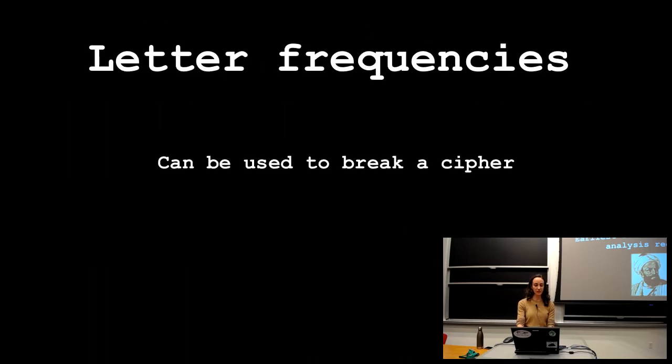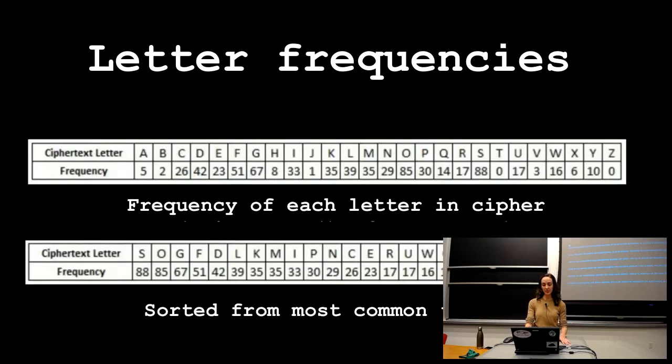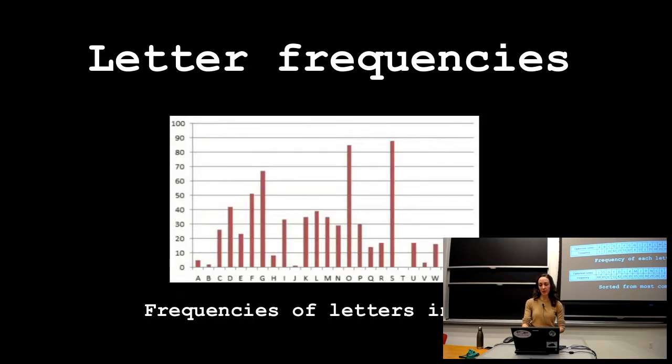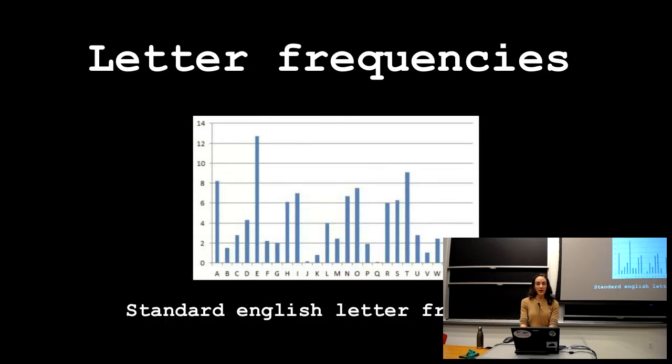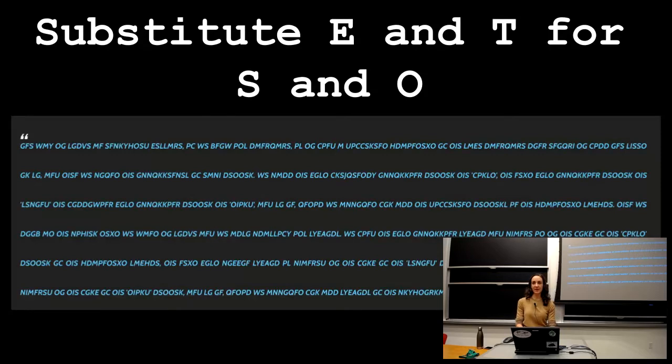So the idea with frequency analysis is that you can use it to break any substitution cipher where you're substituting one character for another one. And if you had encoded text that looks something like this, you could go through and count the number of times that each letter appears. And if I did that, I could get a table that looks something like this. And I could sort it so that the most frequently appearing letters come first. So in this case, that's the letter s and the letter o. And if I made a graph of that, you can see here it's a little more obvious. The letter o and the letter s are the most commonly used letters. And then I could graph the standard frequencies of letters in the English language. And here, the two most commonly used ones are the letter e followed by the letter t. And again, the most frequently used letters in our cipher, the letter s and the letter o. So based on that, I can guess that it might be a good idea to substitute e and t for s and o in my encoded text.